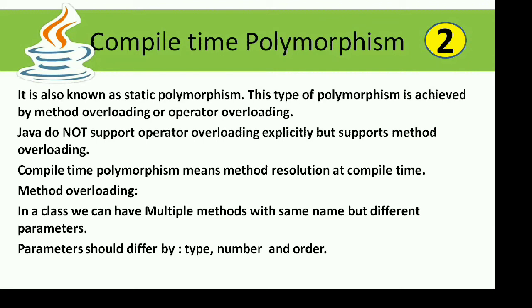Compile time polymorphism means method resolution at compile time. What is method overloading? In a class we can have multiple methods with the same name but different parameters, and these parameters can differ by type, number, and order.